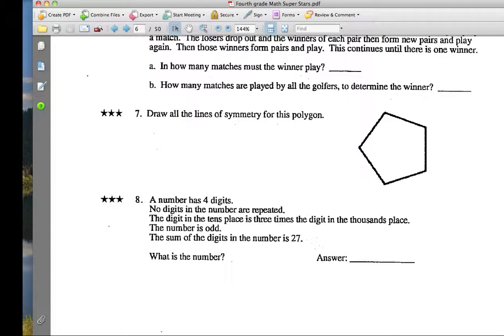The final problem here, number eight, says we have a four-digit number. No digits in the number are repeated. The digit in the tens place is three times the digit in the thousands place. The number is odd, and the sum of the digits in the number is 27. So let's see if we can't figure this out.